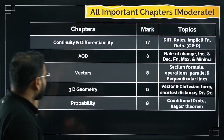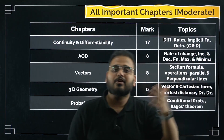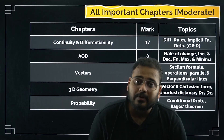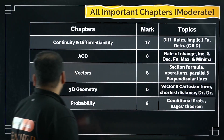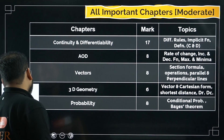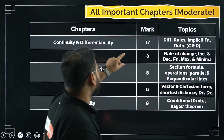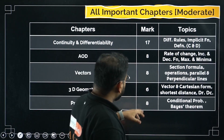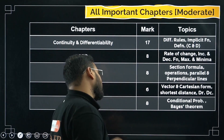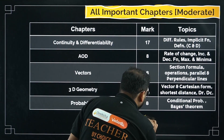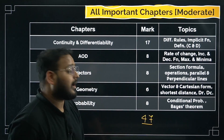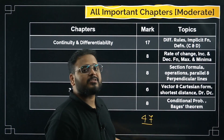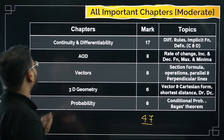Coming up first are important chapters which have a moderate category of difficulty level. They can be solved — you have to put some effort into it and solve some questions, but it can be done. The total weightage here is 17 plus 16 equals 33, plus 14 equals 47. So we have a total of 47 marks from these chapters, including optional questions.